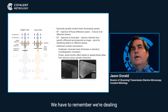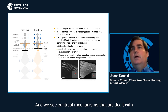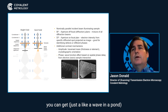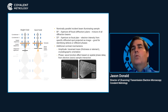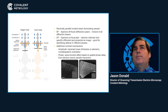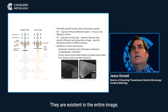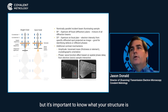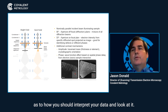The second contrast mechanism is phase. We're dealing in the quantum mechanic world where electrons can be treated as either a particle or a wave, and we see contrast mechanisms that arise from the sample interaction with the crystalline structure. Just like a wave in a pond, you can get constructive or destructive interference, which can impact the nature of what you see and the contrast. All TEM images have a combination of amplitude and phase contrast — it's important to know your structure, as that will help you interpret your data.